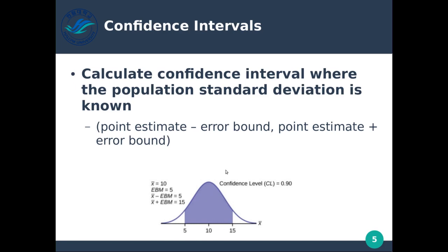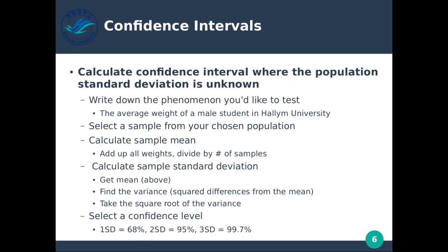Depending on what exactly we're measuring, plus or minus 5 may be really horrible or very good, depending on what we're calculating. Calculating the confidence interval where the population standard deviation is unknown is more like real life — we don't usually know our population standard deviation.